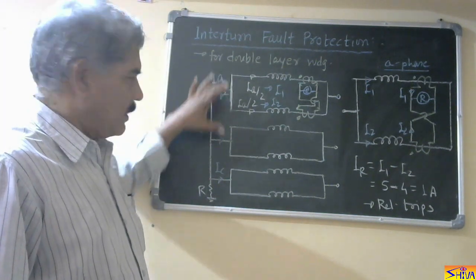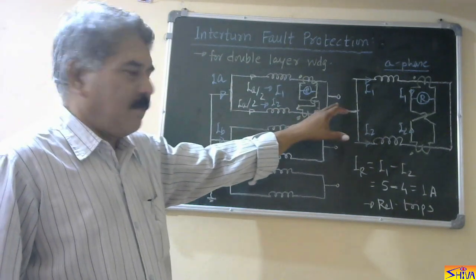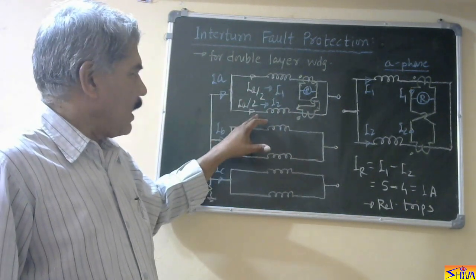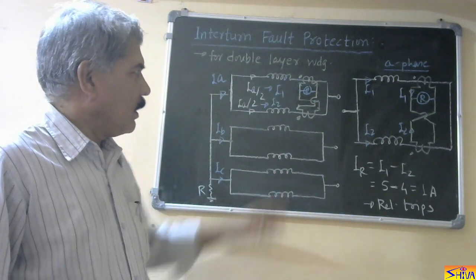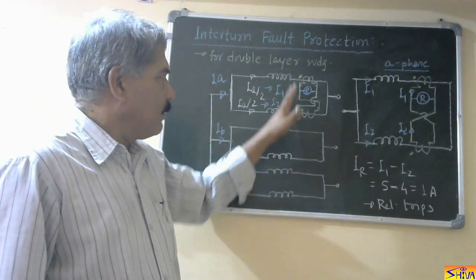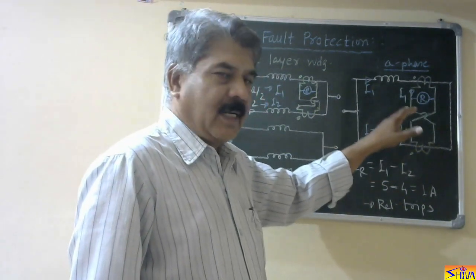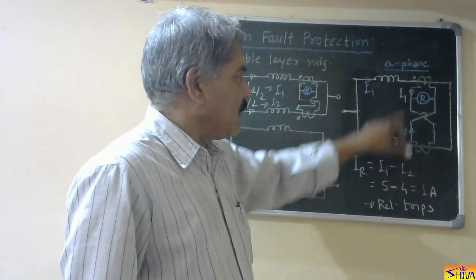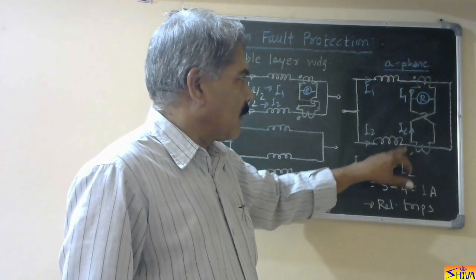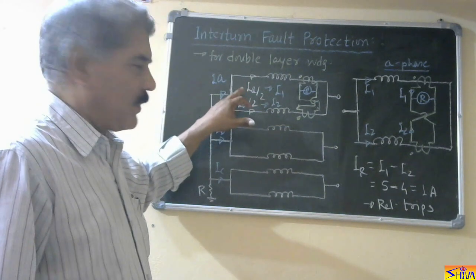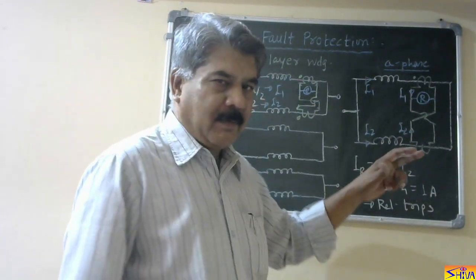I will explain the cross-differential protection scheme. Here, let us consider phase A, phase B, and phase C — all with double-layer winding shown. So if the current in phase A is Ia, then Ia by 2 will flow through each layer of the winding. Similarly, Ib by 2 flows in each layer of phase B, and Ic by 2 in each layer of phase C. For phase A, one CT is placed in one layer and a second CT in the other layer. The relay current is I1 minus I2, which equals zero under normal conditions since both layers carry Ia by 2.